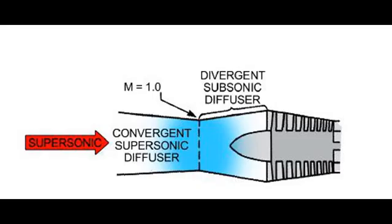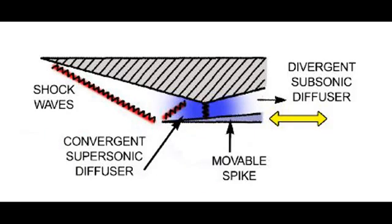A convergent-divergent inlet duct, fixed or variable, is required on all supersonic aircraft, as shown in the figure. A supersonic transport, for example, is configured with an inlet that slows the airflow to subsonic speed at the face of the engine, regardless of aircraft speed. Subsonic airflow into the compressor is required if the rotating aerofoils are to remain free of shockwave accumulation, which would be detrimental to the compression process. To vary the geometry or shape of the inlet, a movable restrictor is often employed to form a convergent-divergent (CD) shape of variable proportion.